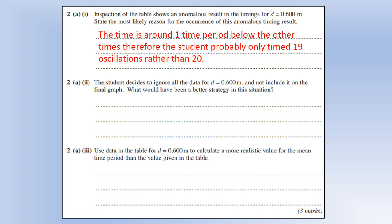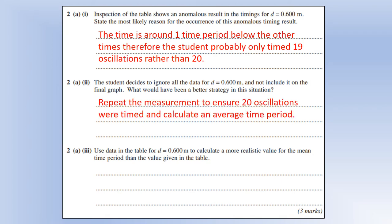So the student decides to ignore all the data from d equals 0.600 meters and not include it on the graph. What would have been a better strategy? Well, they've got two good pieces of data for that length, so there's no reason to then completely discard it all. All you would need to do is redo that measurement and make sure it's 20 oscillations and then calculate an average time period from that point.